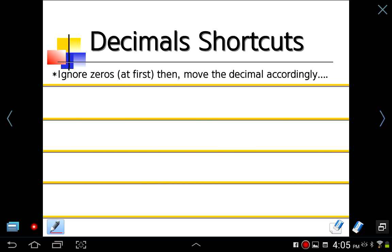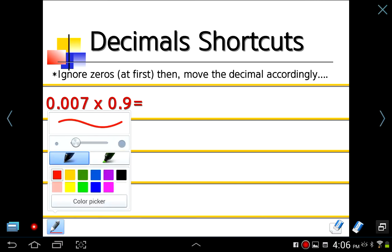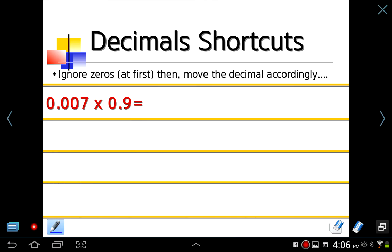Some decimal shortcuts here that might be helpful to you is just ignoring zeros at first, then moving the decimal point accordingly. This kind of problem might intimidate you at first, and you're thinking this is way too hard for me. But don't be put off by all the zeros and decimal points. It's really just seven times nine. Just do that math. Seven times nine is sixty-three.